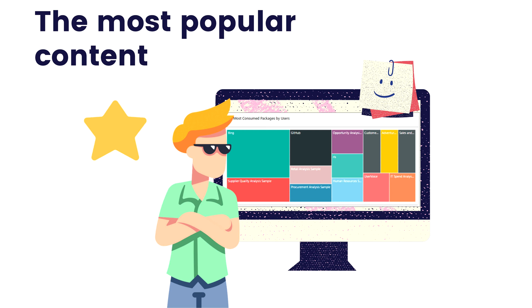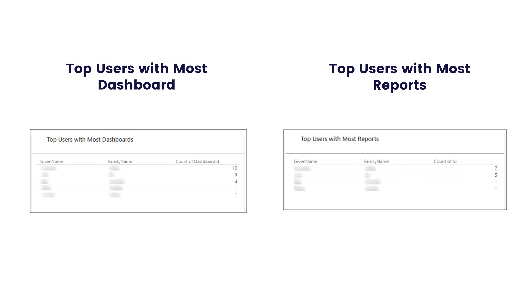The next metric is most popular content. When you are in the admin portal under usage metrics, you will see the most popular content users connected to. This content can be anything users reach through the get data process, such as SaaS content packs, organizational content packs, files, or databases — displayed as a tree map on screen. You will find two sections: one for individual users showing top users with the most dashboards and reports, and another for groups showing top groups with the most dashboards and reports.